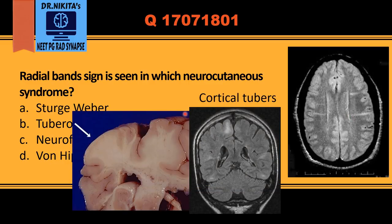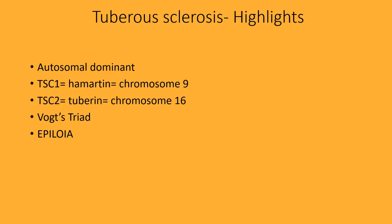Cortical tubers may also be seen in tuberous sclerosis. On MRI, a cortical tuber appears hyperintense on FLAIR — that is, a hamartoma.